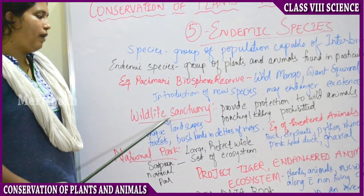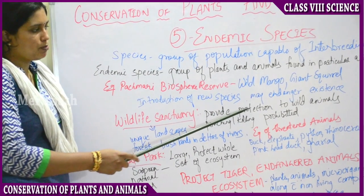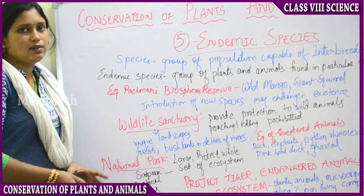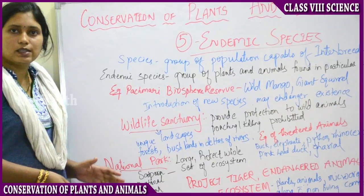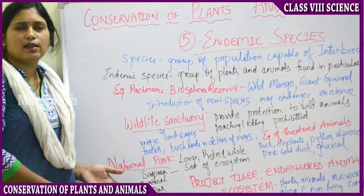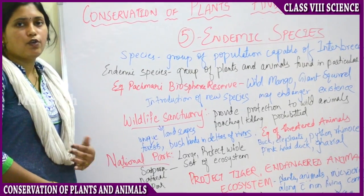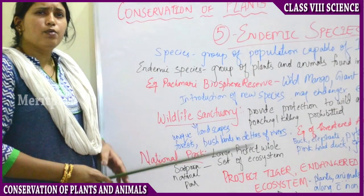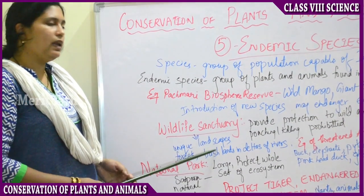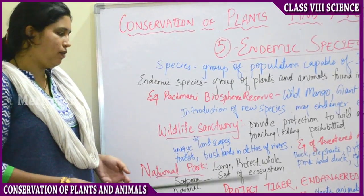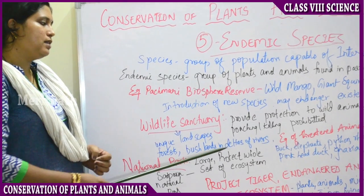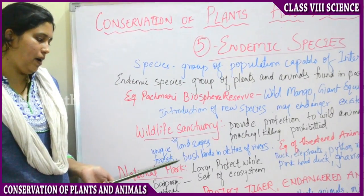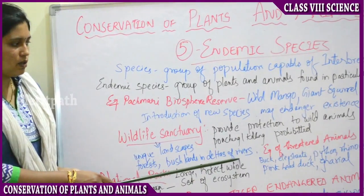Coming to wildlife sanctuaries — wildlife sanctuaries are areas that protect wild animals. Only wild animals live in sanctuaries, and poaching or killing of animals in these sanctuaries is not allowed. Even taking camera photos of those animals is not allowed. Wildlife sanctuaries are usually large areas of land with unique landscapes full of trees, plants, river water, forest, bushlands, and deltas of rivers.